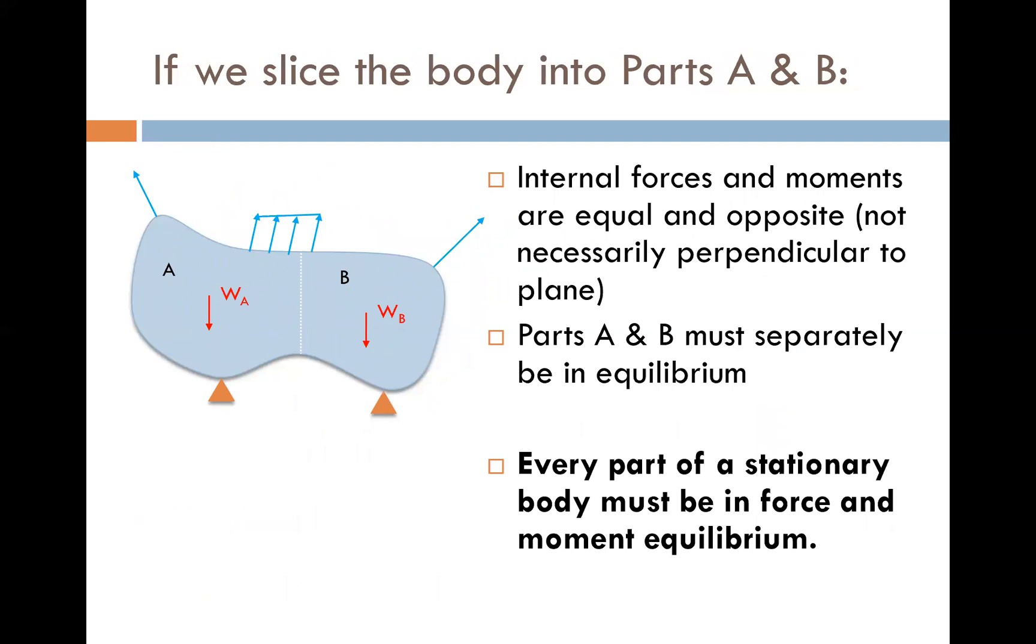And if we slice the body in half, the resulting two pieces must also be in force and moment equilibrium. So that means if we were to draw just the left half of this object, and now it has an internal plane exposed, we can look at or we will see that there are now forces acting on that plane. And the magnitude and direction of those forces is going to be dependent on what other forces are acting on this body.